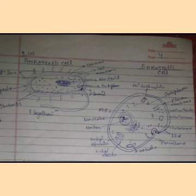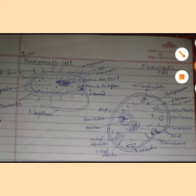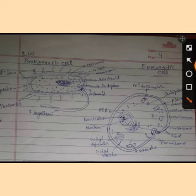In case of a prokaryotic cell, the labeled components include: cell wall, cell membrane, nucleoid, cytoplasm, plasmid, ribosome, capsule, and pilus.